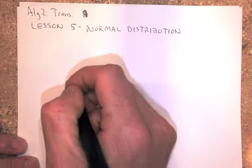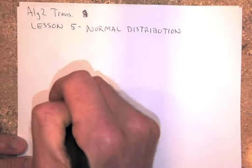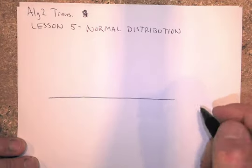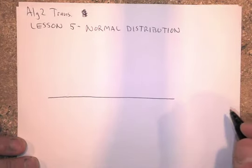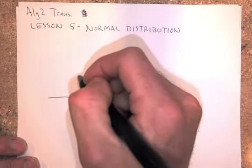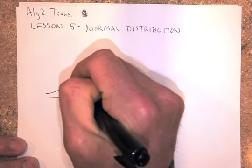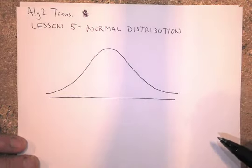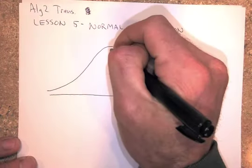So what we're looking at is this normal curve. On all these problems today that you do, you're going to have to draw out this normal curve. So I'm just going to make my x-axis. I'm just going to kind of sketch this curve like this, roughly. It's a bell-shaped curve, and we're going to divide it up.